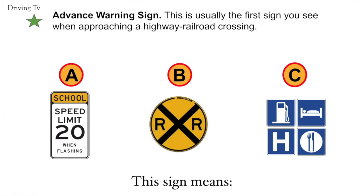Advance warning sign. This is usually the first sign you see when approaching a highway railroad crossing. The correct answer is B. Advance warning sign.